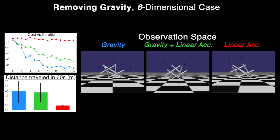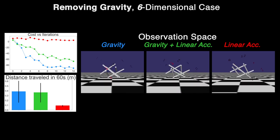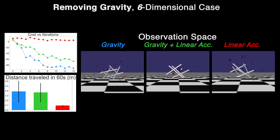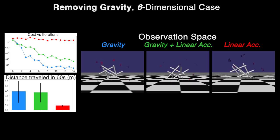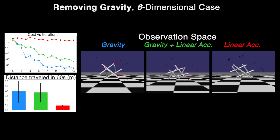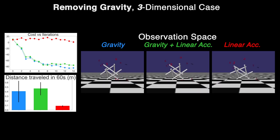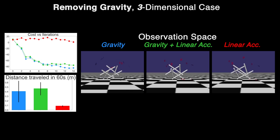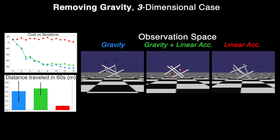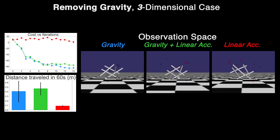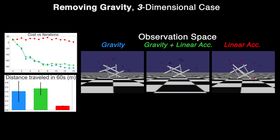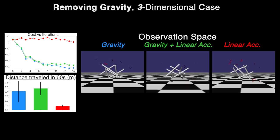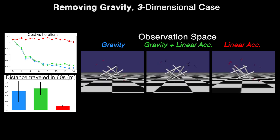The greater success of the policy trained on gravitational data implies that the principal features required to enact successful locomotion can be derived from the orientation of the robot in space, independent of its dynamics and acceleration.